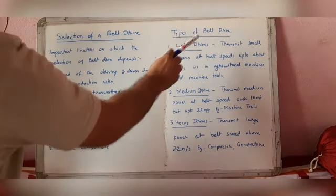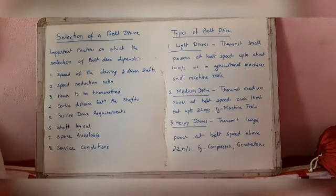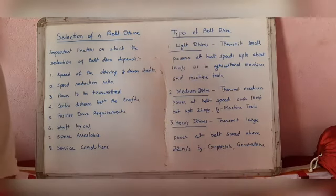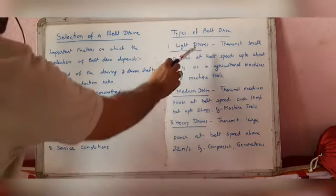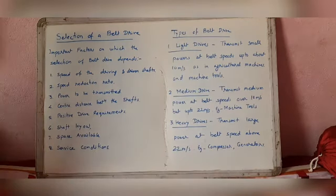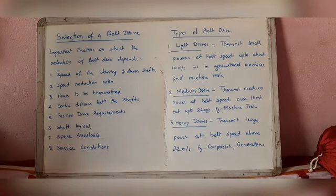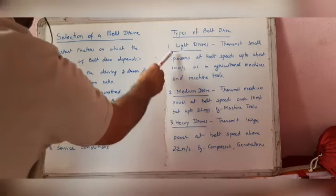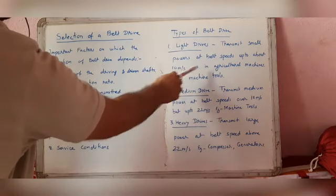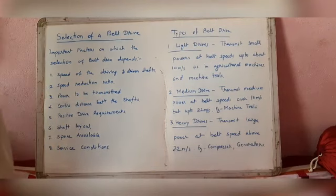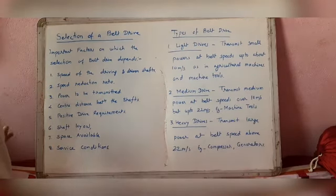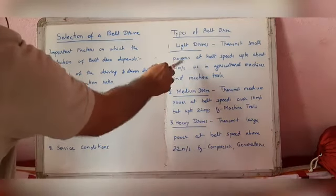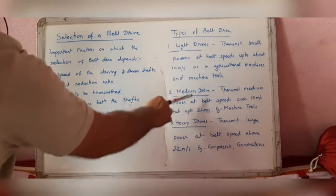There are three types of belt drive. First is light drive, which transmits small power at belt speeds up to about 10 meters per second. It is used in agriculture and small machine tools where small machines are used.